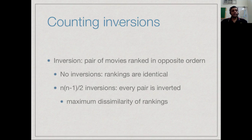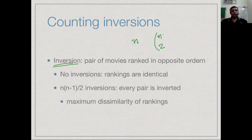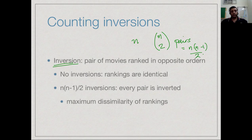We measure dissimilarity in terms of what we call inversions — how many pairs of movies are ranked in the opposite way between you and your friend. If there are 0 inversions, your rankings are identical and your tastes are exactly similar. If you have n movies, there are n-choose-2 pairs, which is n(n-1)/2. So in the worst case there are n(n-1)/2 inversions, which is of order n squared. This inversion count can be used in the recommendation system to decide which customers to compare — you only want to pick customers who are close to the one whose recommendation is being made.